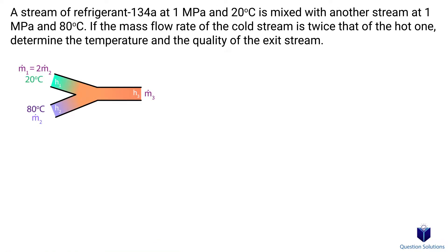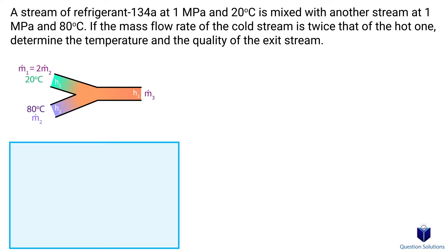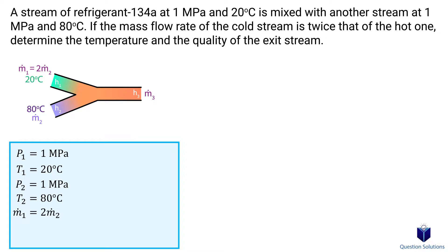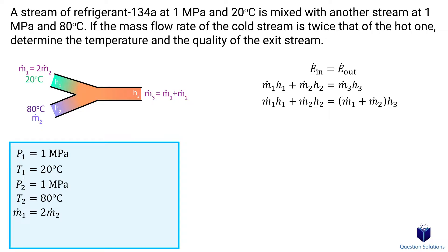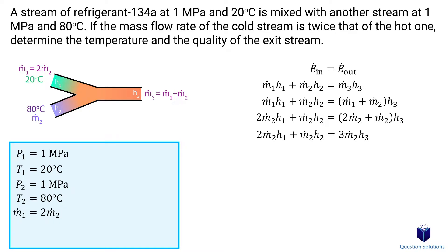In this problem, we have two streams of R134a being mixed together. We need to find the temperature and quality of the exit stream. For the first stream: pressure of 1 MPa, temperature of 20 degrees Celsius. For the second stream: pressure of 1 MPa, temperature of 80 degrees Celsius. We are told the mass flow rate of the first stream is twice that of the second. Starting with the energy balance for a mixing chamber, we replace mass flow 3 with the sum of mass flows 1 and 2, then substitute m-dot-1 = 2·m-dot-2, and simplify by dividing all terms by m-dot-2.